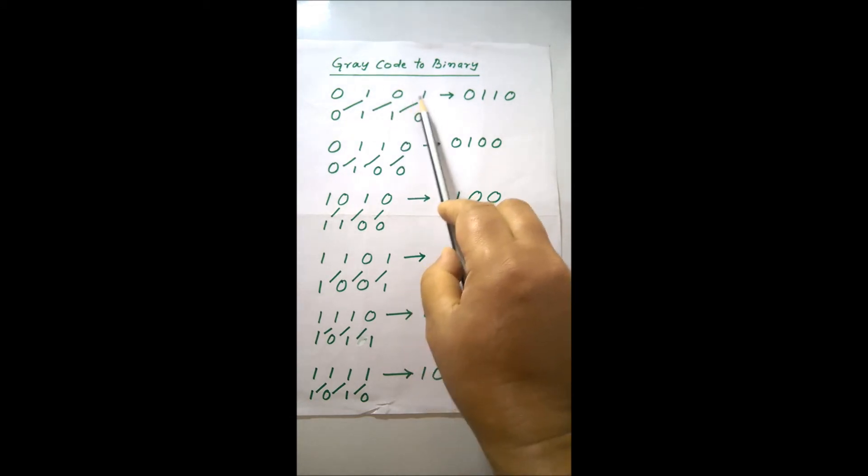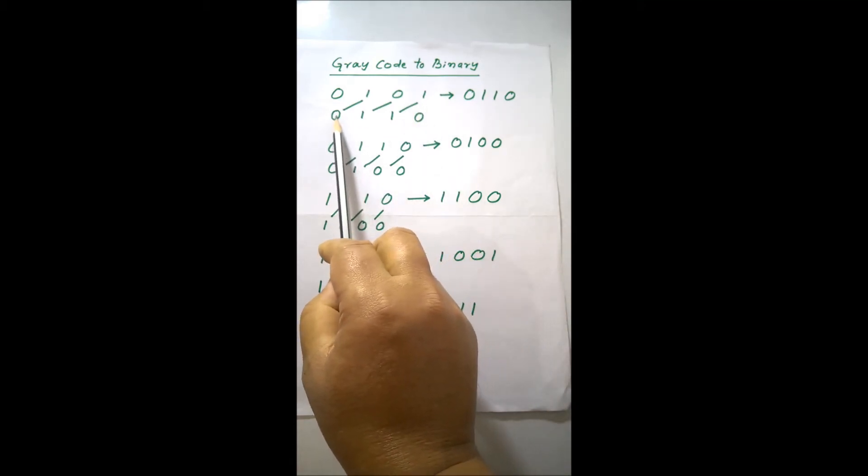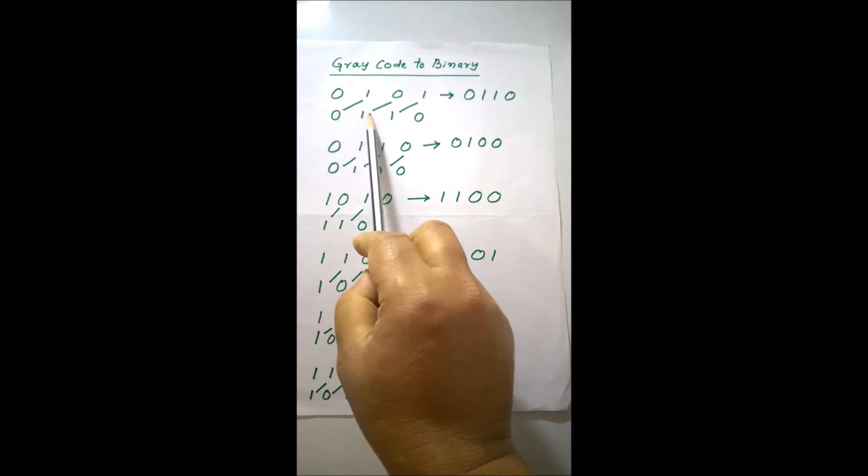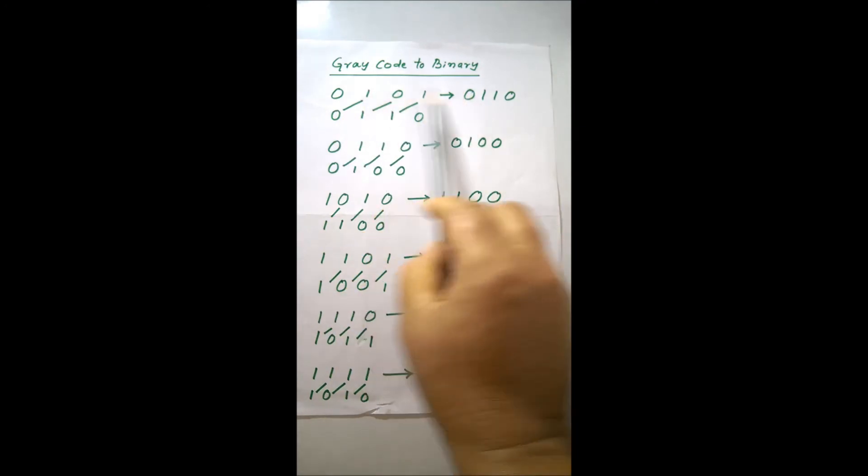And after that, because 1 and 1, XORing will be 0. And that is your conversion. 0, 1, 1, 0. I am writing here, 0, 1, 1, 0. Therefore, this is the grey code.